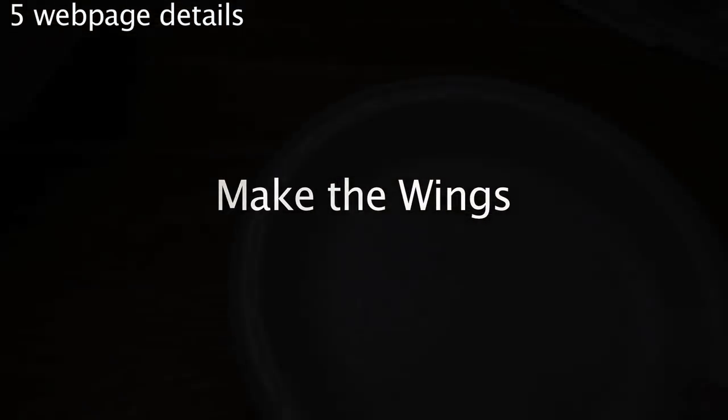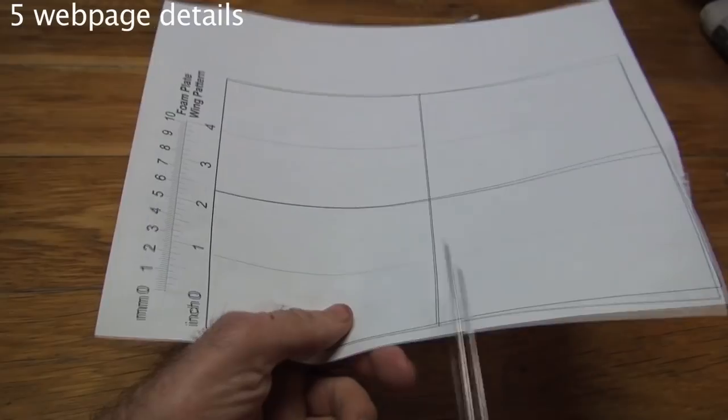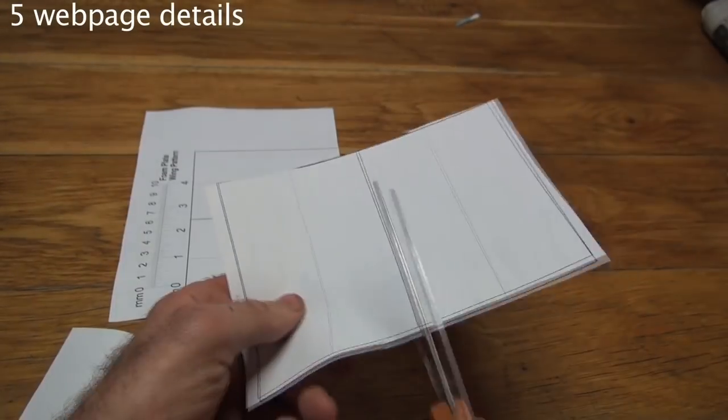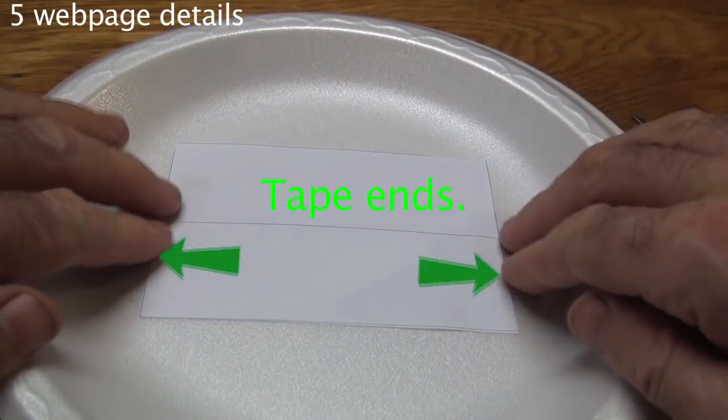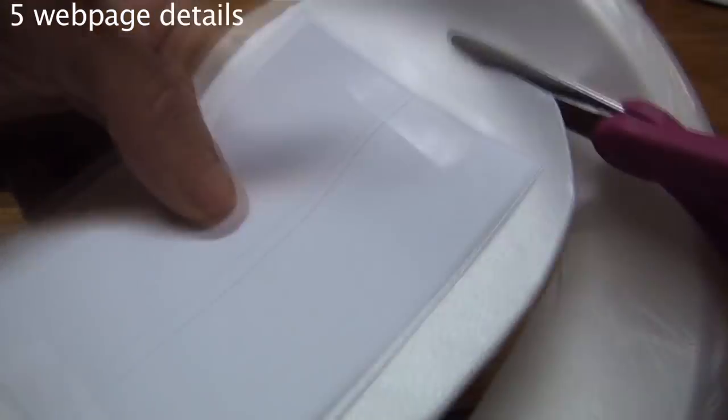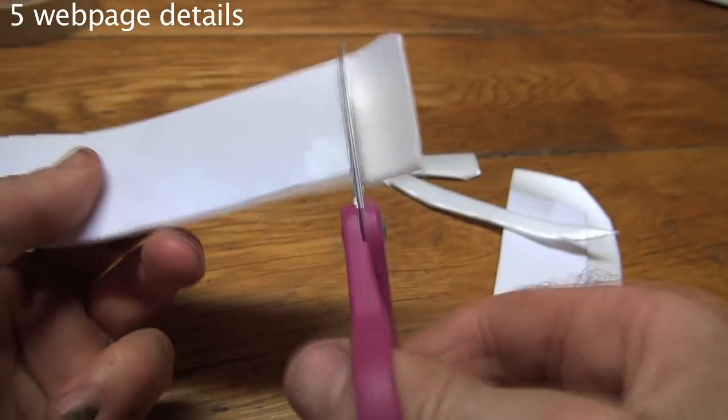Cut the wing from the flat part of a recycled foam plate or takeout container. Print out a pattern page and cut out a double pattern. Tape it on the ends.